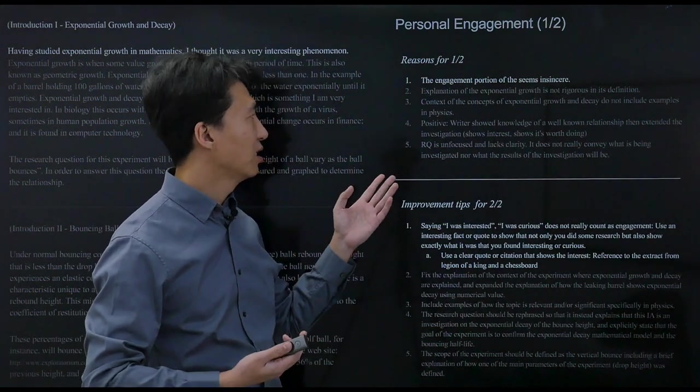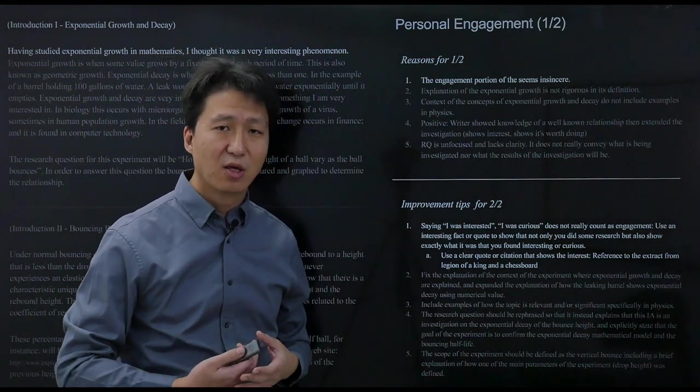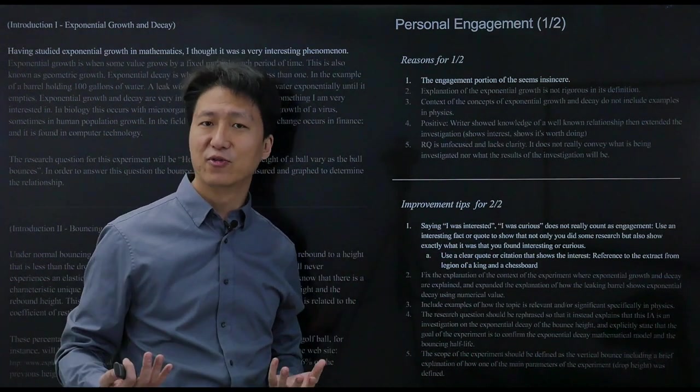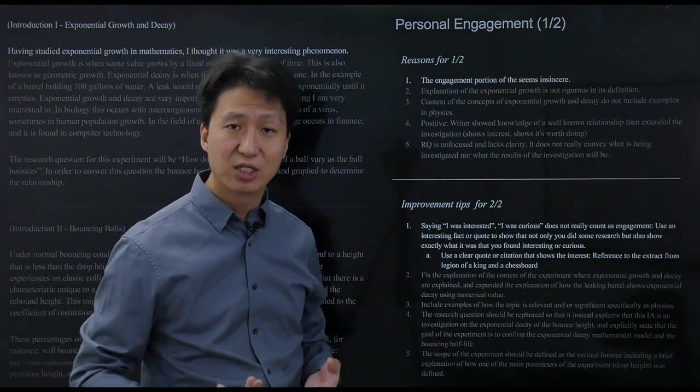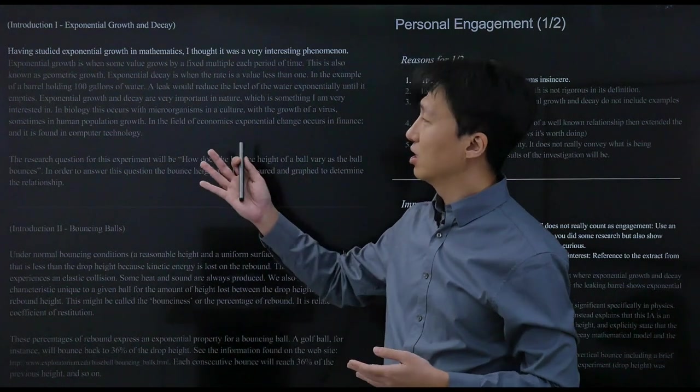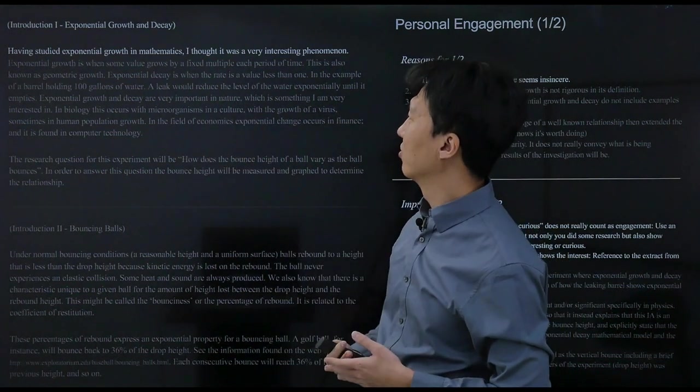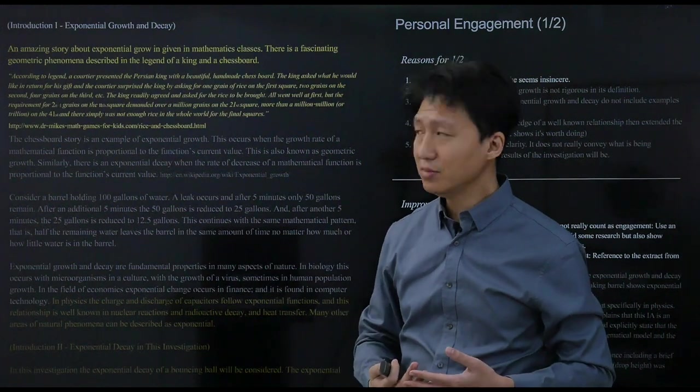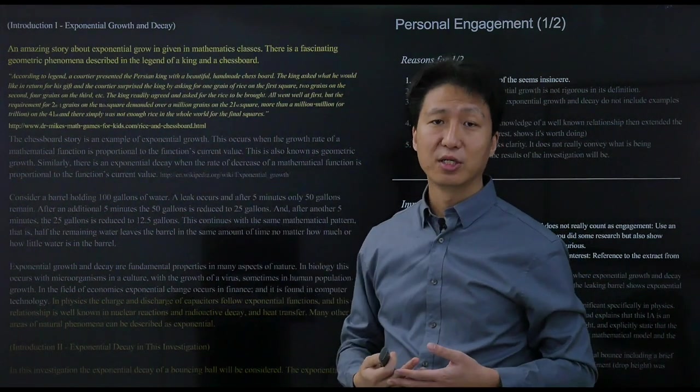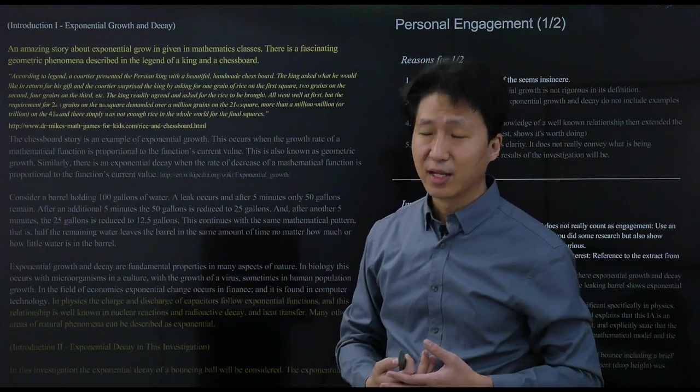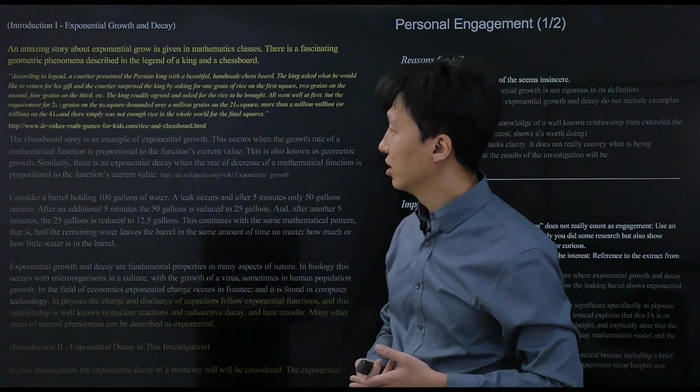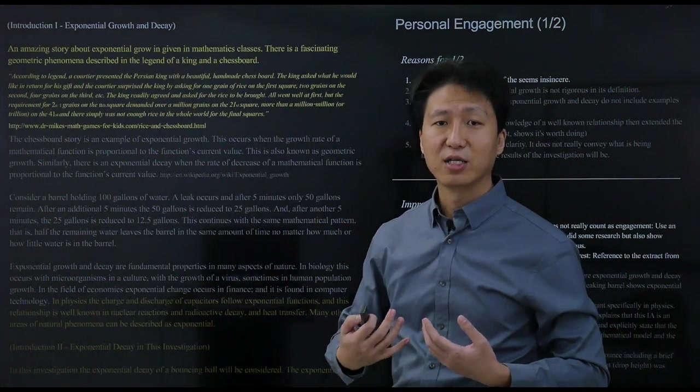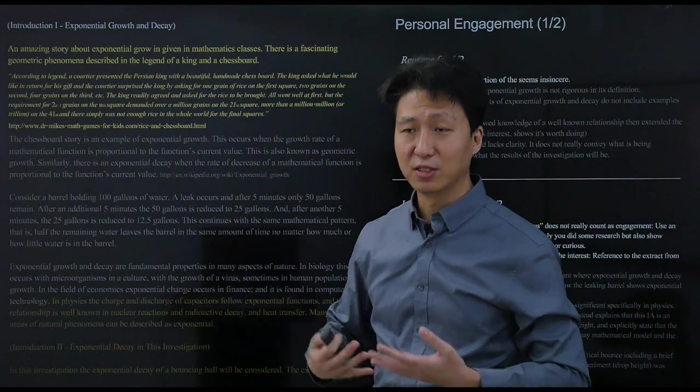First of all, this internal assessment got one out of two for personal engagement and there's a lot of reasons for that. The first reason would be that the engagement was a bit insincere, meaning there was a lot of use of 'I was interested, I was curious, I loved,' but there was not exactly any proof of that. As a student, you have to prove that you're engaged, that you're interested in the subject. How it should have been done is putting some data, for instance, a small quote concerning some interesting fact. Here, they chose the story about the chessboard and the king.